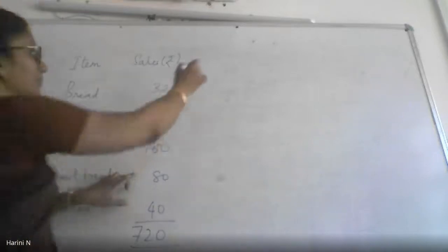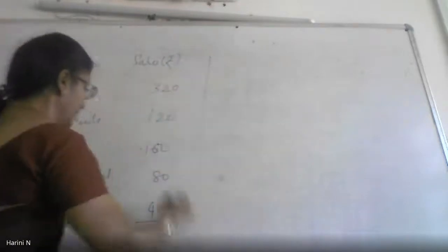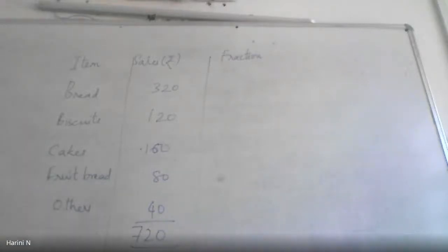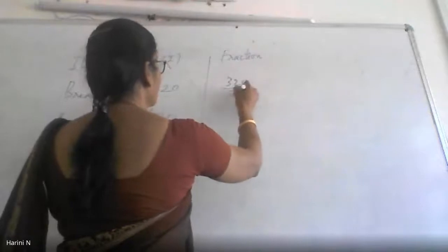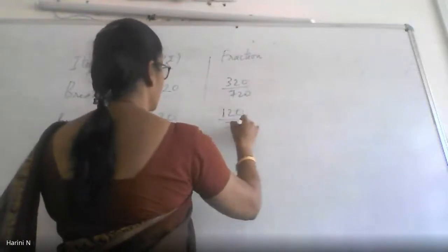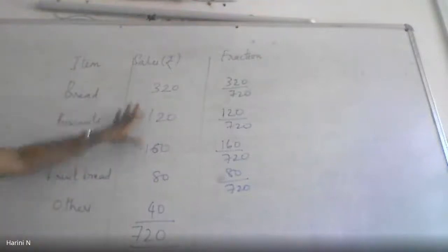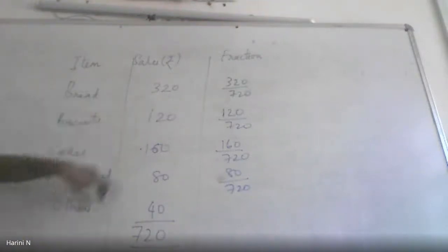You have the first column: the problem data. The next column is the fraction — what fraction of the complete circle will be your bread? That is 320 by 720. For any problem, first find the total of all the quantities given, then find out the individual fraction of each item.